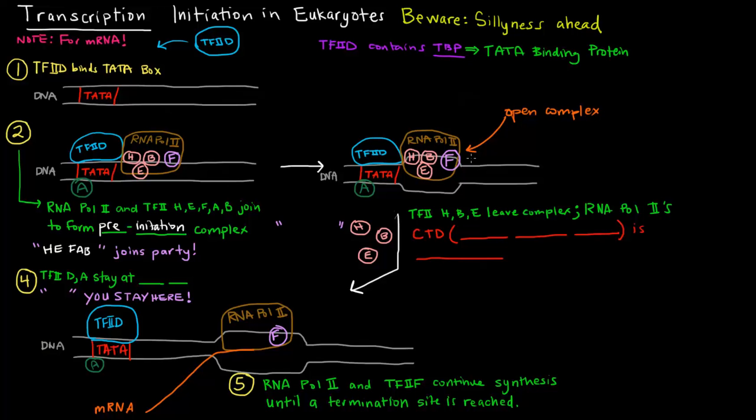Once that complex is stabilized and open and ready to go, H, B, and E, those three transcription factors leave—transcription factors 2H, B, and E leave the complex. So how do I remember that? The way I remember that is, after joining the party and opening things up, he decides he no longer wants to stay. So HBE—he be exiting—he leaves. H, B, and E leave. Here H, E, F, A, and B join the party. Now H, B, and E—he be exiting—they all leave the party.